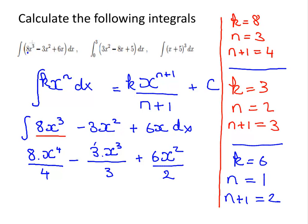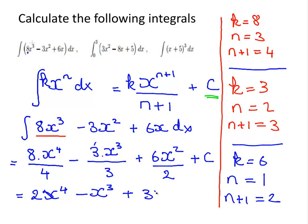Remember the constant of integration — when doing multiple integrations like this, we only need to put one at the end, so we put plus c. Now let's simplify: 8 divided by 4 is 2, giving us 2x to the power of 4. Minus 3 divided by 3 gives minus x cubed. And 6 divided by 2 is 3, giving 3x squared plus c. That is the answer to the first one.